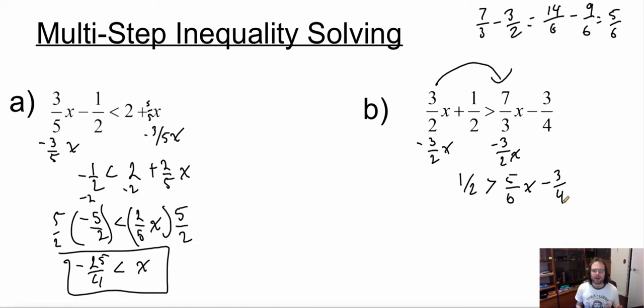So now that we have that, we're going to get our numbers on one side. It's pretty much solving equations, except there's an inequality sign there. So I'm just going to add 3 over 4 to both sides. This is like 2 over 4, plus 3 over 4, gives me 5 over 4.